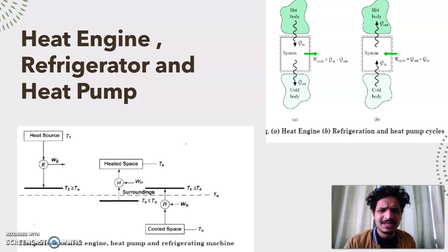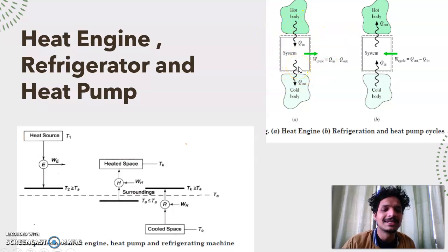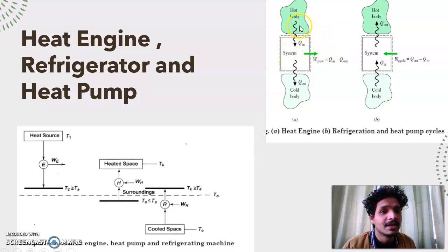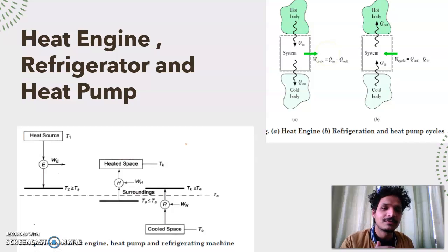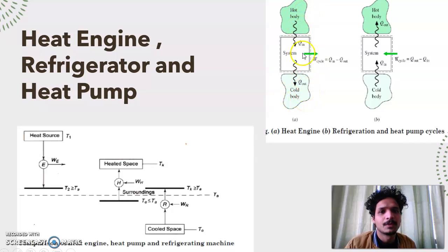So let's see what a heat engine is — a recapitulation of what you have studied in basic thermodynamics. A heat engine is a device that operates in a cycle to produce some work output while taking heat from a hot body, and after producing that work output, some amount of heat is rejected to a cold body. So a heat engine operates between two temperature limits: a higher temperature and a lower temperature.